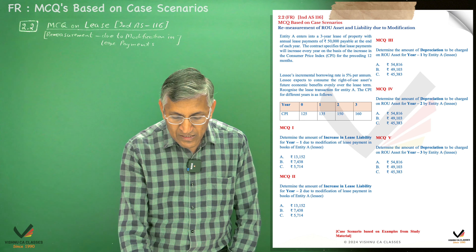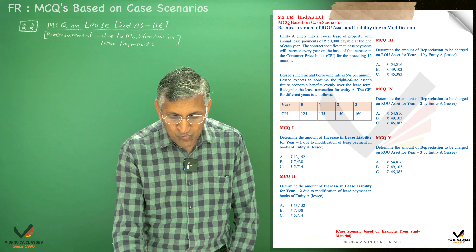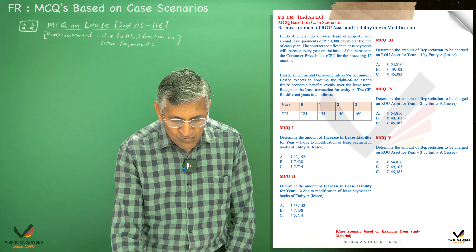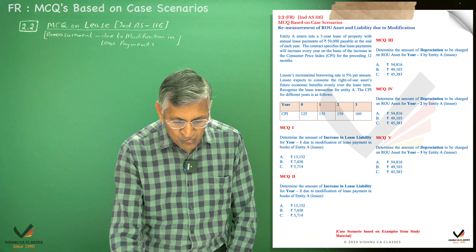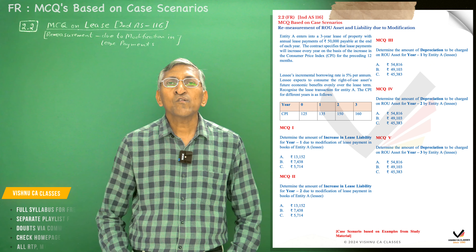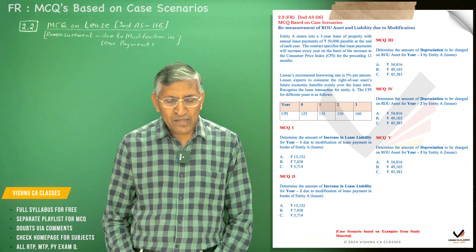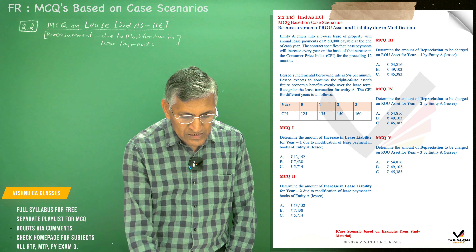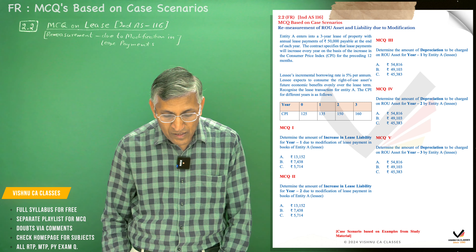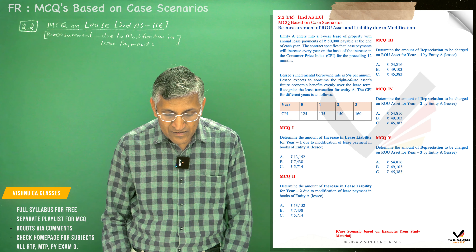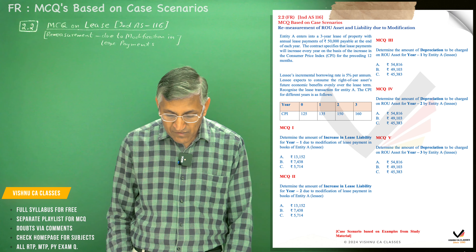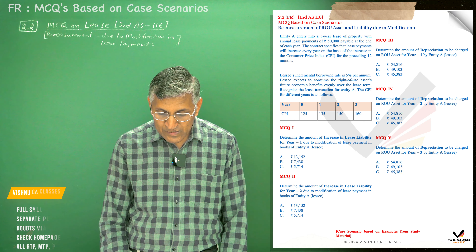We need to recognize the lease transaction for entity A. The consumer price index for different years is given: at the zero period (commencement), CPI is 125; at the end of first year, CPI is 135; at the end of second year, CPI is 150; and at the end of third year, CPI is 160.